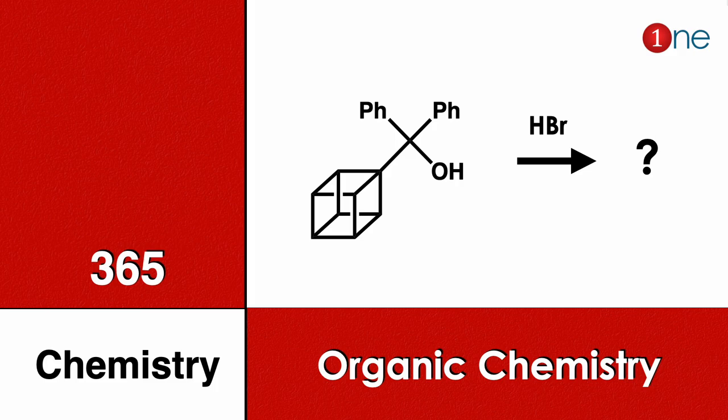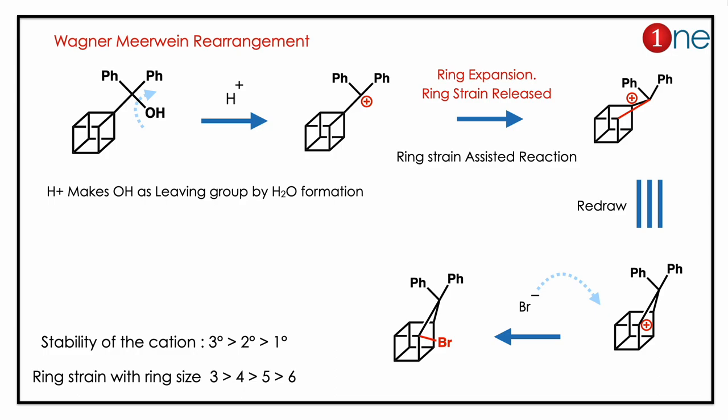Welcome to One Chemistry, this is 365 Chemistry Series. Here's an organic chemistry question for you. You have a cubane system side chain with a tertiary carbon bearing two phenyl groups and an alcohol. You are using HBr. You should find what will be the final product.